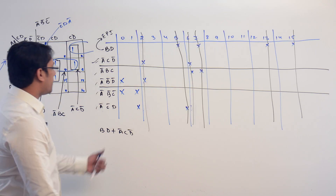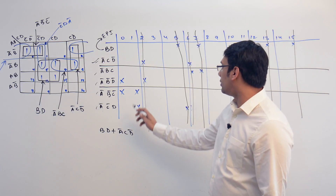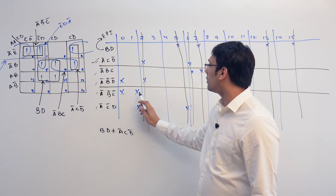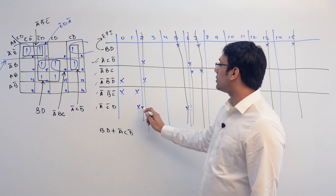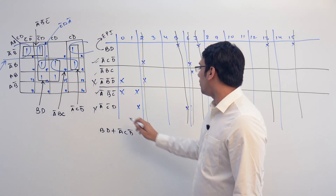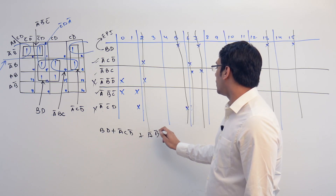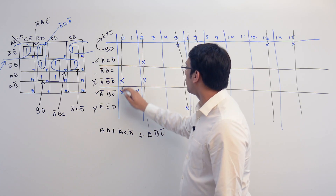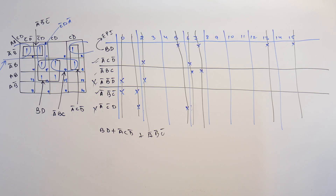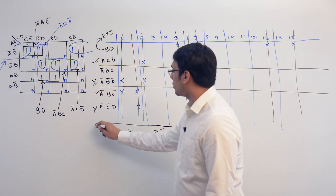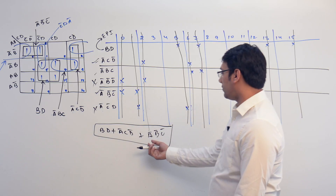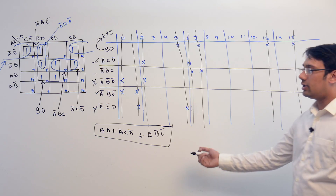Now, if you take A'B'D' or A'CD', we still need to cover minterm 1. However, if you take A'B'C', this covers both 1 and 0. So we are covering every minterm in the solution. This solution equation is minimizing this K-map — we have the least number of literals as well as the least number of minterms.